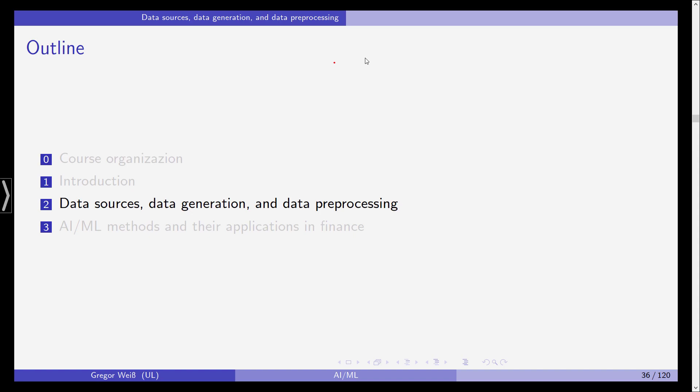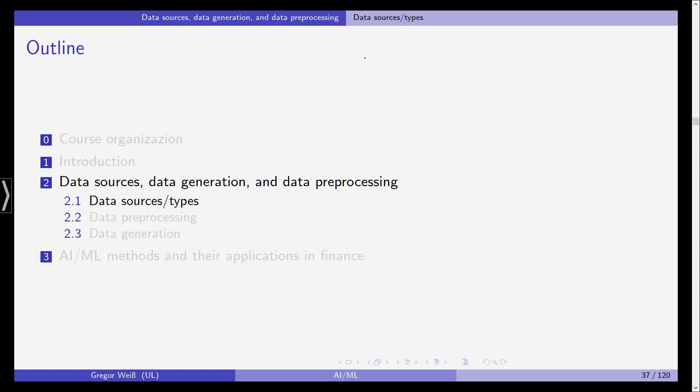Now, in this video I would like to start with Chapter 2, Data Sources, Data Generation and Data Preprocessing. As you can see on this slide, in the three subjects we have, I would like to start with the data sources and data types that we will usually encounter in the applications of AI and ML in Finance.